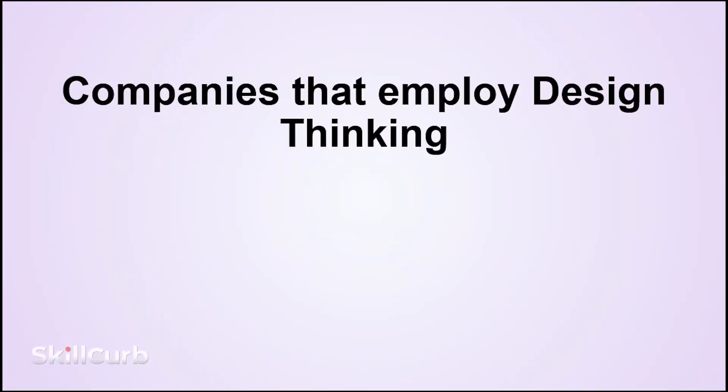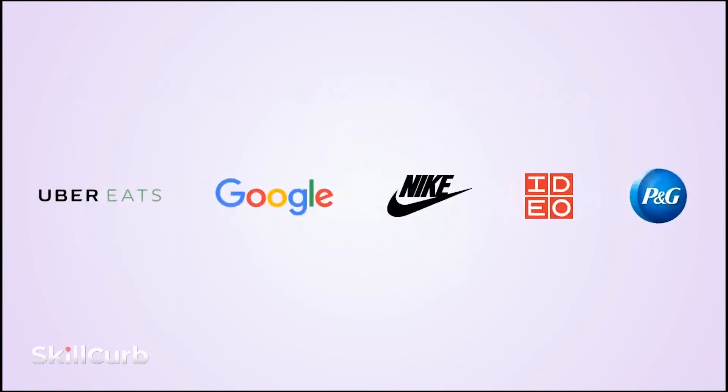Companies that employ design thinking: Uber - creating the future of food delivery through design thinking. Google - how to brainstorm like a Googler, Google's three-step process for generating innovative ideas. Nike - design thinking infuses everything Nike does, how Nike became a fashion powerhouse through design. UCSF and IDEO - application of design thinking to schizophrenia care. Proctor and Gamble - using design thinking to guide product development for Oil of Olay brand.